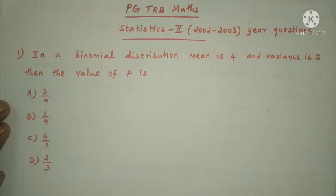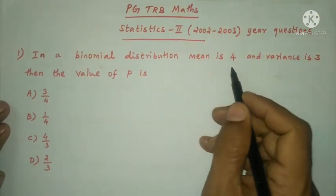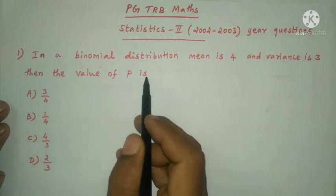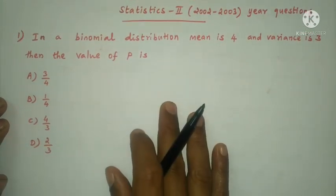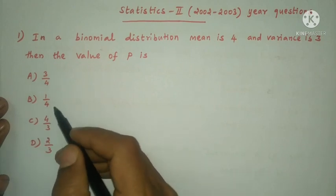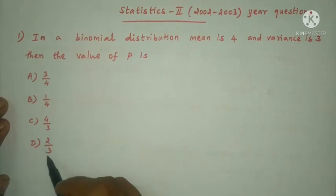First question: In a binomial distribution, mean is 4 and variance is 3, then the value of P is option A 3 by 4, option B 1 by 4, option C 4 by 3, option D is 2 by 3.